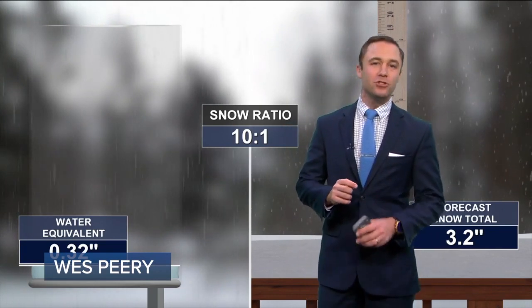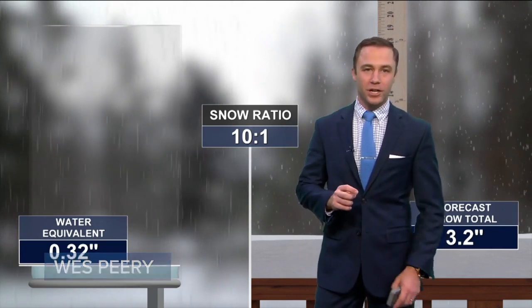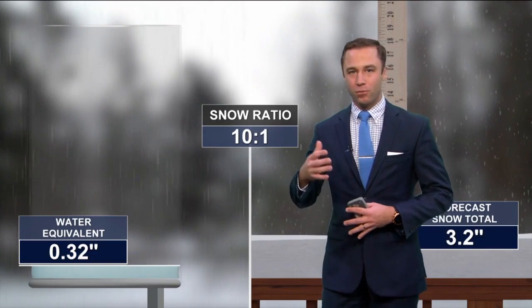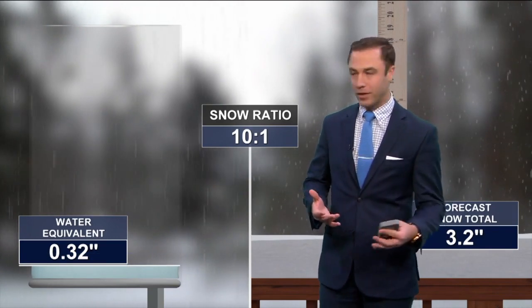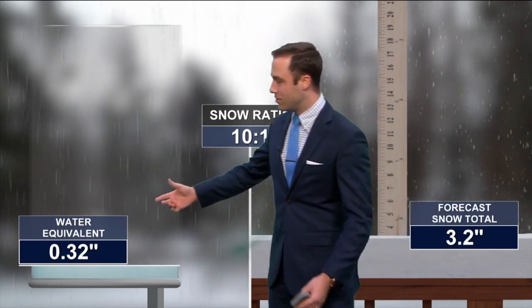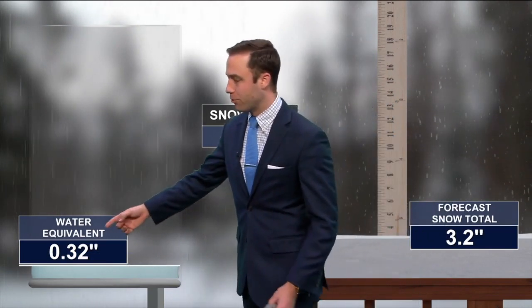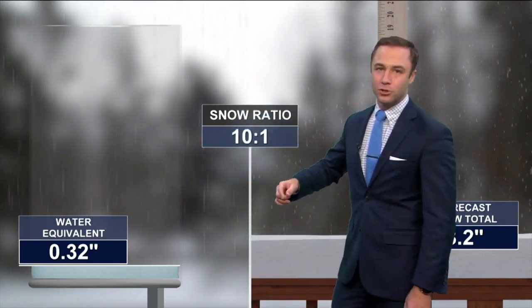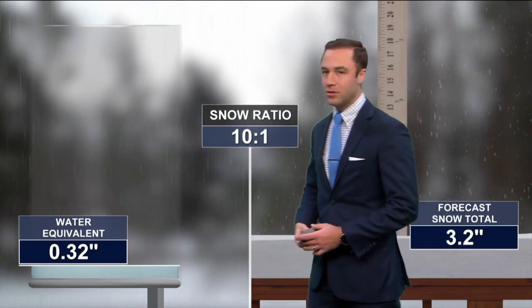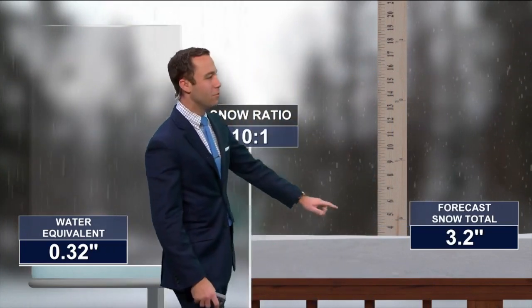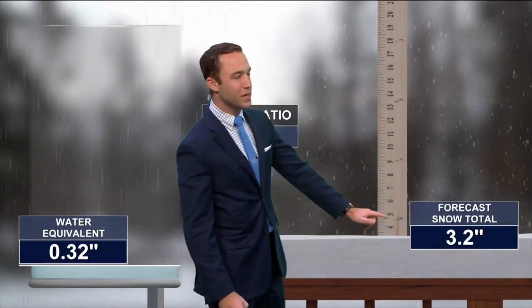We call this the snow-to-liquid ratio, and it has to do with what your air temperature is versus how much moisture you have to create snow. In this instance, we have about 3 tenths of an inch of liquid. Our snow ratio is 10 to 1, so that means you do 0.32 times 10, and it gives you 3.2 inches of snow.